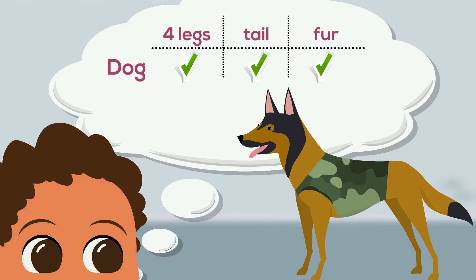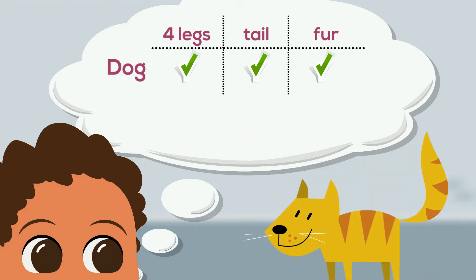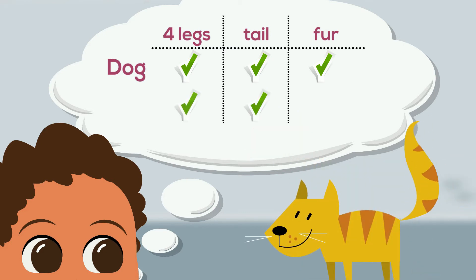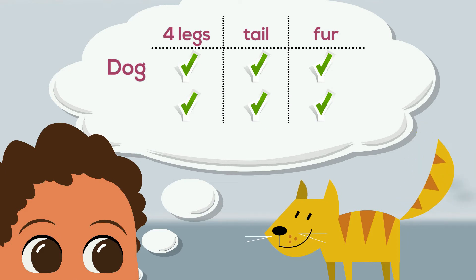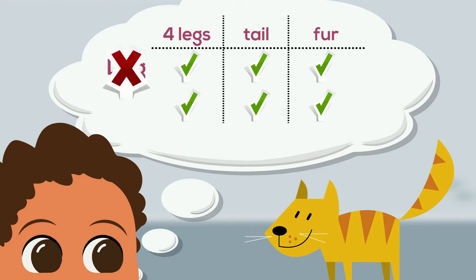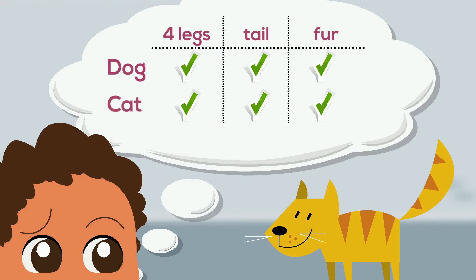Later on, the child discovers another animal — say, a cat. It has a tail, four legs, and is furry too. So the child will probably slot the animal into the schema he or she already has and will naturally assume that it is a dog. When the parents explain that it is not a dog, the child is put into a state of mental confusion. He or she now has to modify the framework and accommodate and add new details to the information in order to create a new schema for cats.